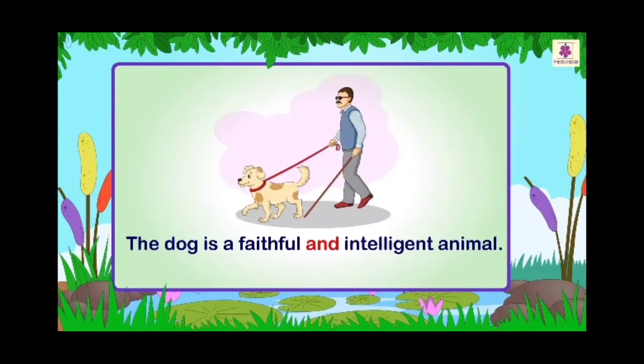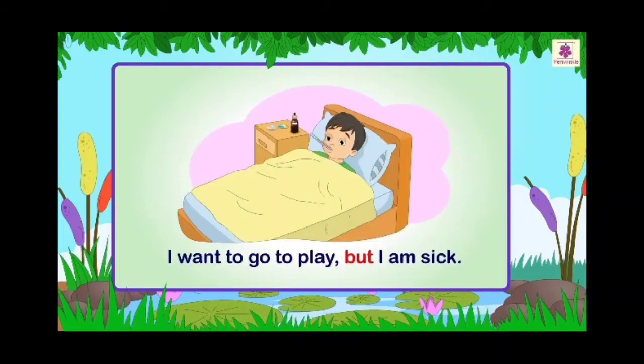...and intelligent animal. Here you see two sentences: 'The dog is a faithful animal' and 'The dog is an intelligent animal,' but we have joined these two sentences using 'and.' Similarly, 'I want to go to play, but I am sick.' Here also, the word 'but' is joining two sentences.